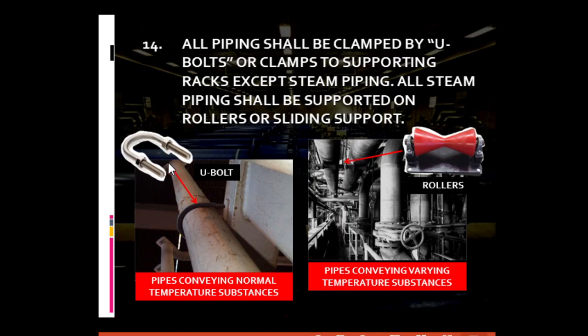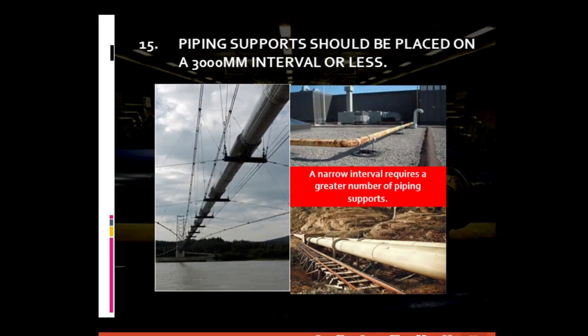Shown here are a U-bolt and a roller pipe support. For general piping requirement number fifteen: piping supports should be placed at a 3,000 mm (3 meter) interval or less. The proper location and number of piping supports is important to prevent possible collapse of the piping system. Too many piping supports prevent collapse but result in unnecessary expenses. Using too few supports lowers initial investment cost but leads to higher expenses in the long run due to the strong possibility of pipe system collapse.